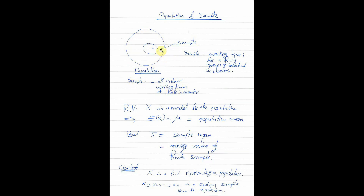In the same example, if we're focusing on waiting times, what is the sample? The sample is a small part taken from the population. So the sample in this context would be the waiting times for a finite group of selected customers. Imagine I stand at this check-in counter and observe 20 customers — for each one I have a waiting time. So my sample contains only 20 waiting times out of the population.